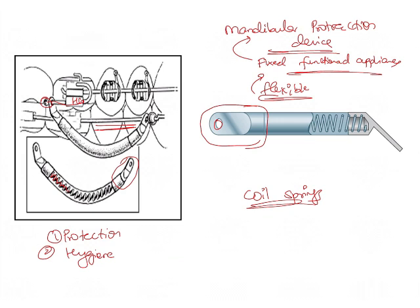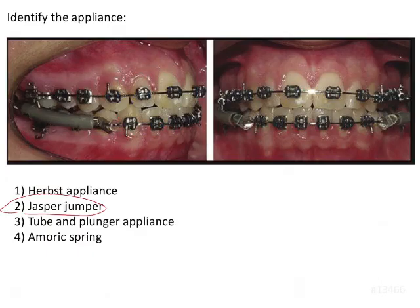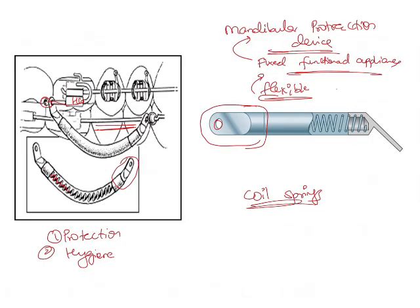The anterior portion is held into the main arch wire. Another characteristic feature is the Legs-in bead — a plastic bead given in the Jasper Jumper to provide an anterior stop, so that the appliance does not hit against the brackets and cause debonding.